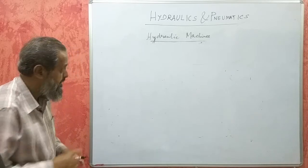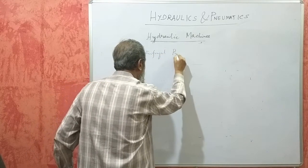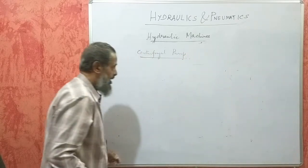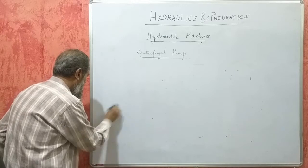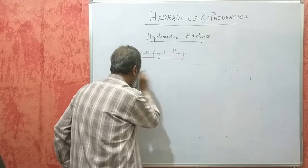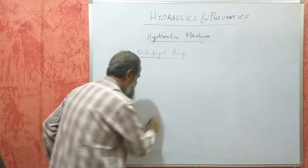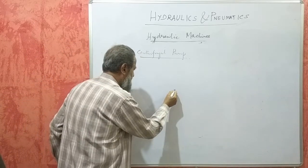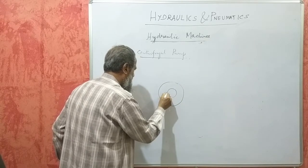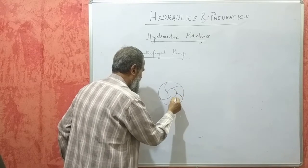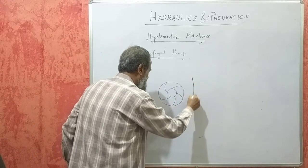A centrifugal pump has a rotating part called the impeller. The impeller is a wheel mounted on a shaft — keyed to a shaft — having vanes similar to the runner of a reaction turbine. The impeller is enclosed in a casing.